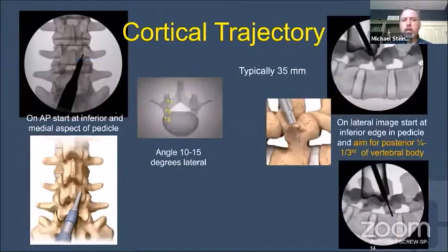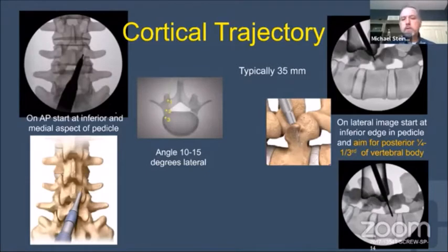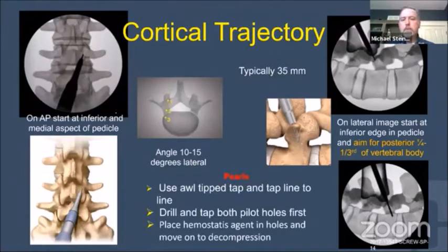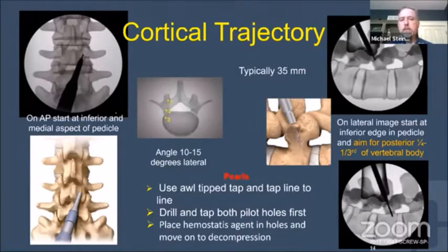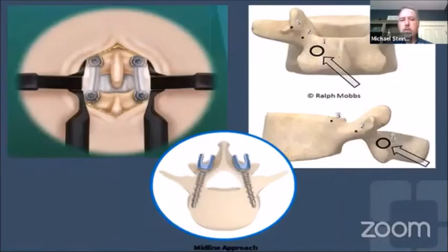On lateral fluoroscopy, aim up towards the upper end plate without violating it, staying in the posterior one-fourth of the vertebral body. In my hands, that is almost always a 35-millimeter screw, sometimes a 40-millimeter at L5. I drill the hole, tap to the same diameter and depth — typically a 5.0-millimeter by 35-millimeter screw, using a 5.0 tap to 35 millimeters — then place a hemostatic agent and perform the laminectomy. Under image guidance, I can put in four holes and four screws in less than five minutes through that small incision.